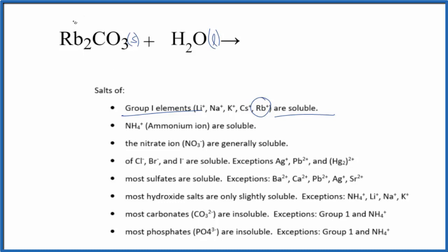So we'll end up with Rb+ and remember we have two of them, so we'll put a 2 here. And we'll have the carbonate ion CO3 2-.